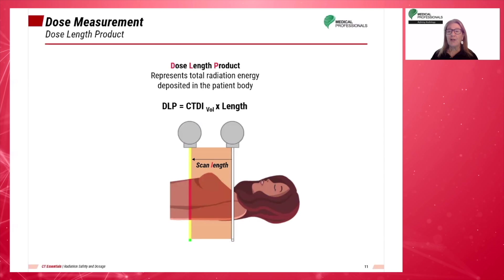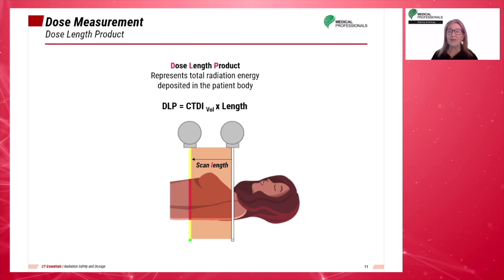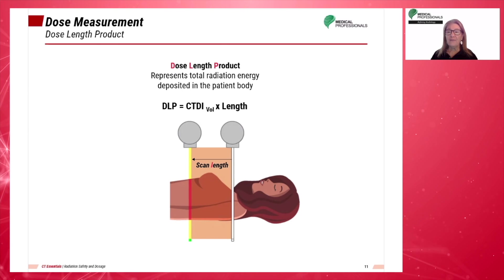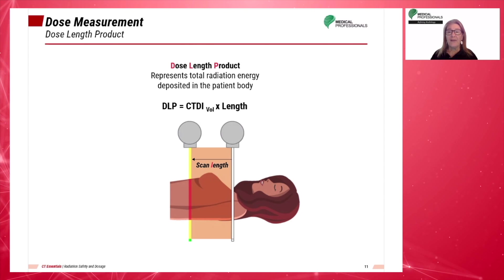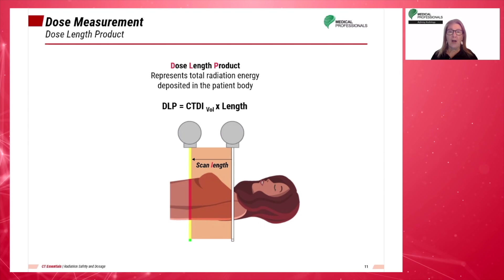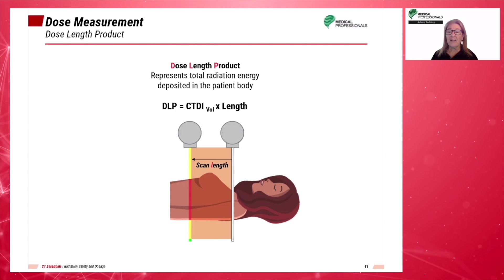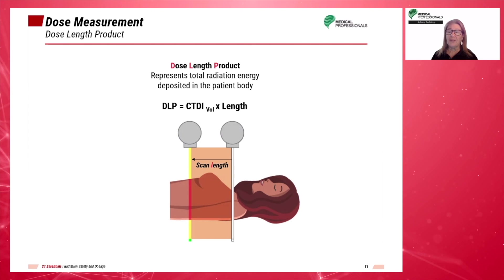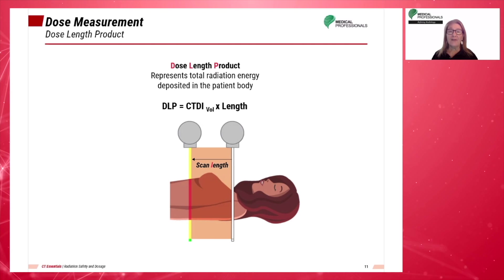Currently, the quantity being used as an indicator of patient dose from CT examinations is the Dose Length Product, or DLP. The effective dose can be calculated from the DLP using conversion coefficients proposed for specific routine examinations or by using special software. This gives us the total amount of exposure for a series of scans as opposed to one slice, and is directly proportional to the scan length — it is the product of volume CTDI and the scan length.